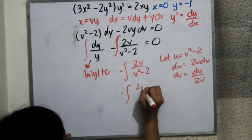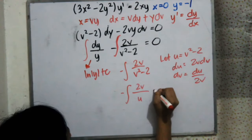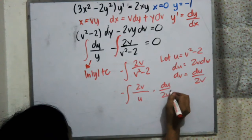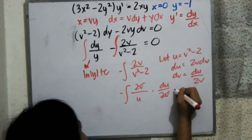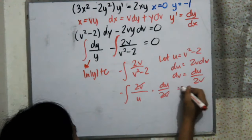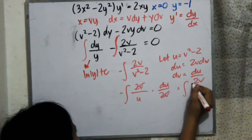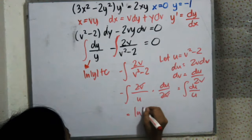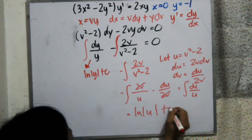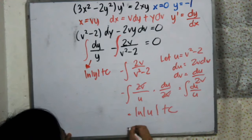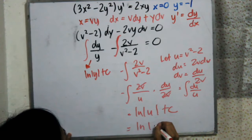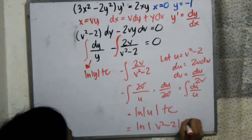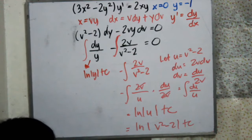We cancel the 2v terms, leaving us with the integral of negative du over u, which equals negative ln|u| plus C. Substituting back our value of u, which is v squared minus 2, we get negative ln|v squared minus 2| equals C.